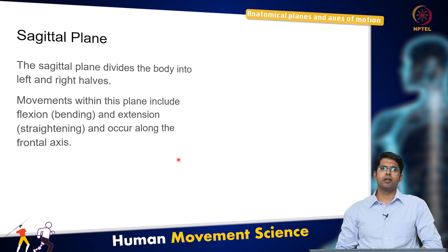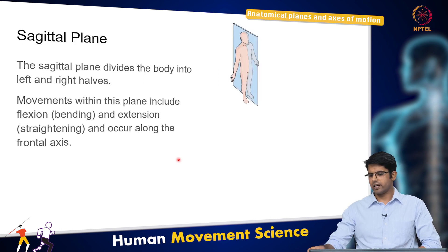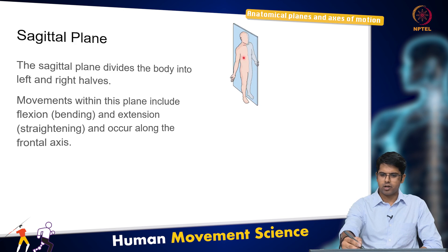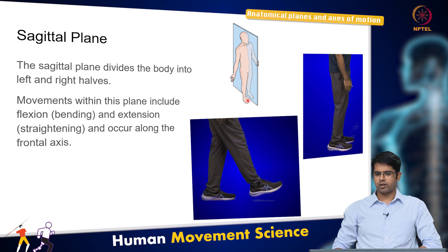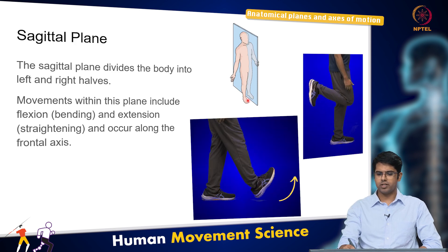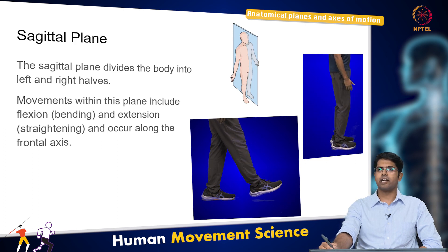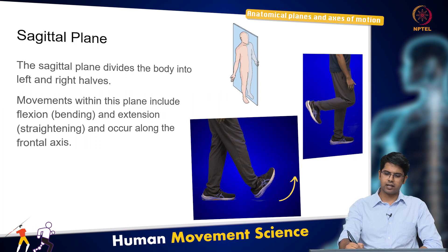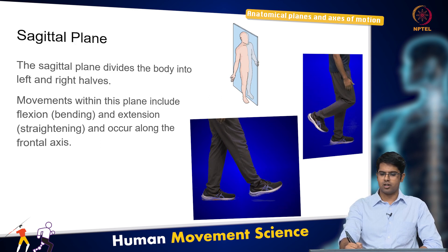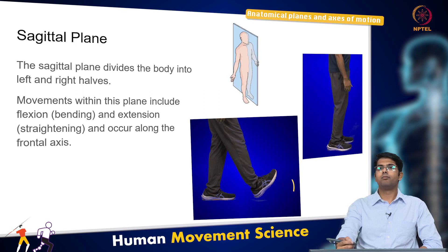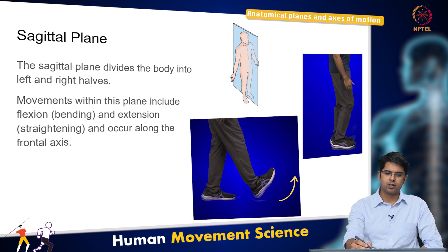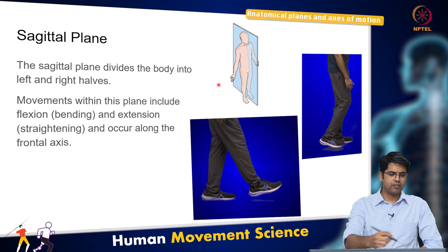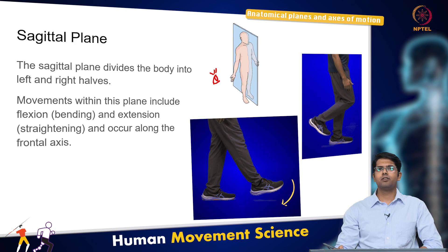The sagittal plane divides the body into left and right halves. If this is the human body, there is a plane that goes straight through the middle of the body. Movements in this plane usually include flexion and extension. If you are looking at the side view of certain movements — for example, the knee is flexing and extending, and the ankle is flexing and extending — essentially you are looking at the movements from the side view.